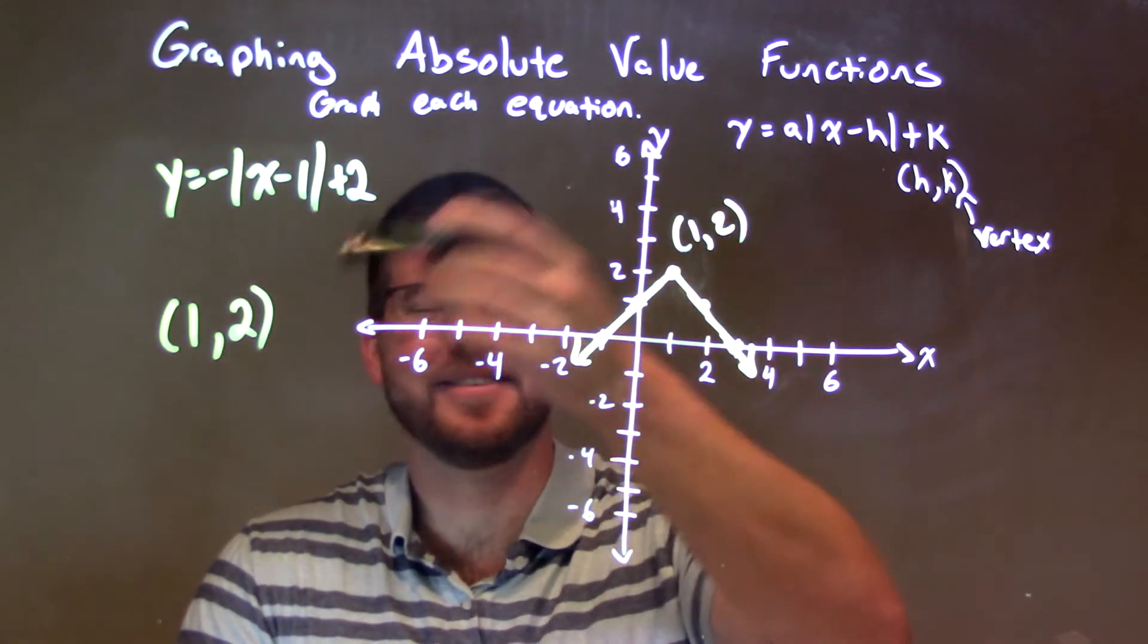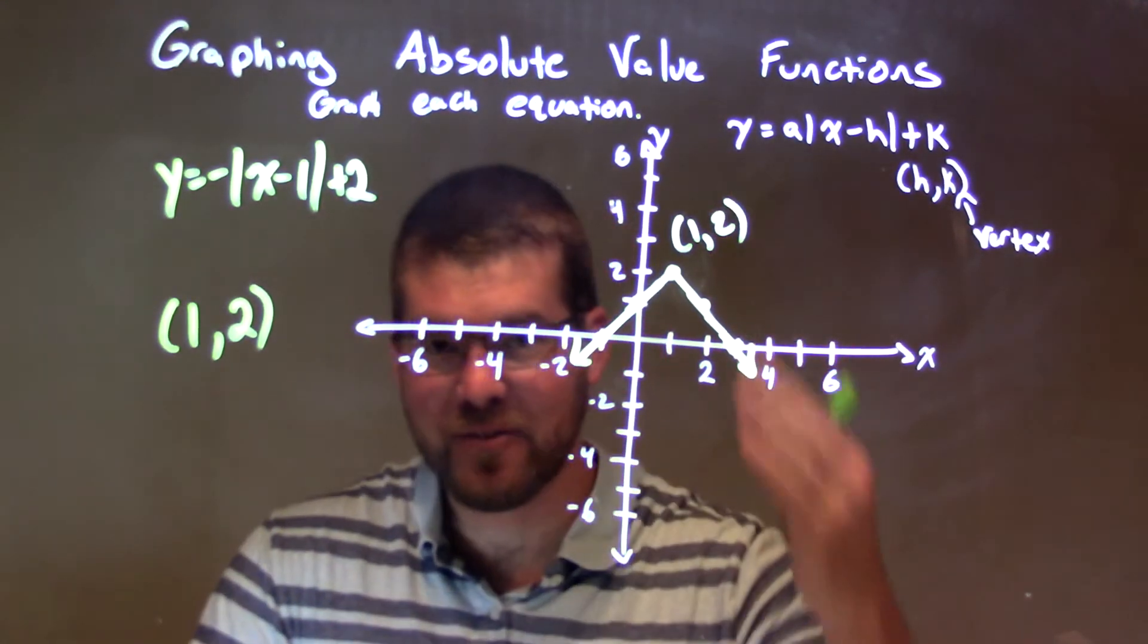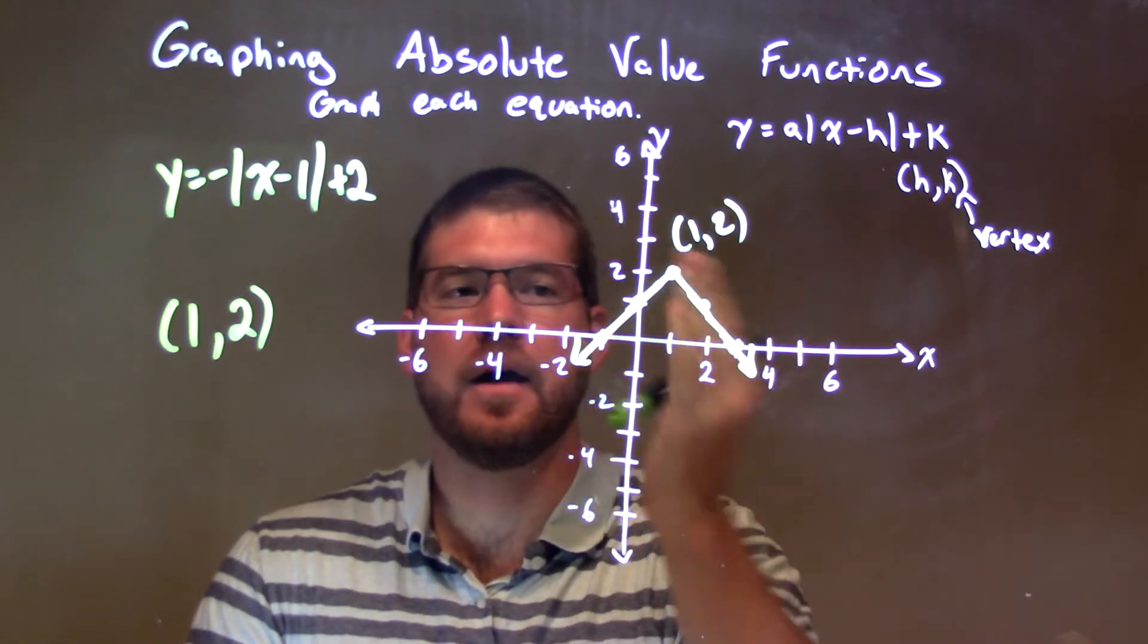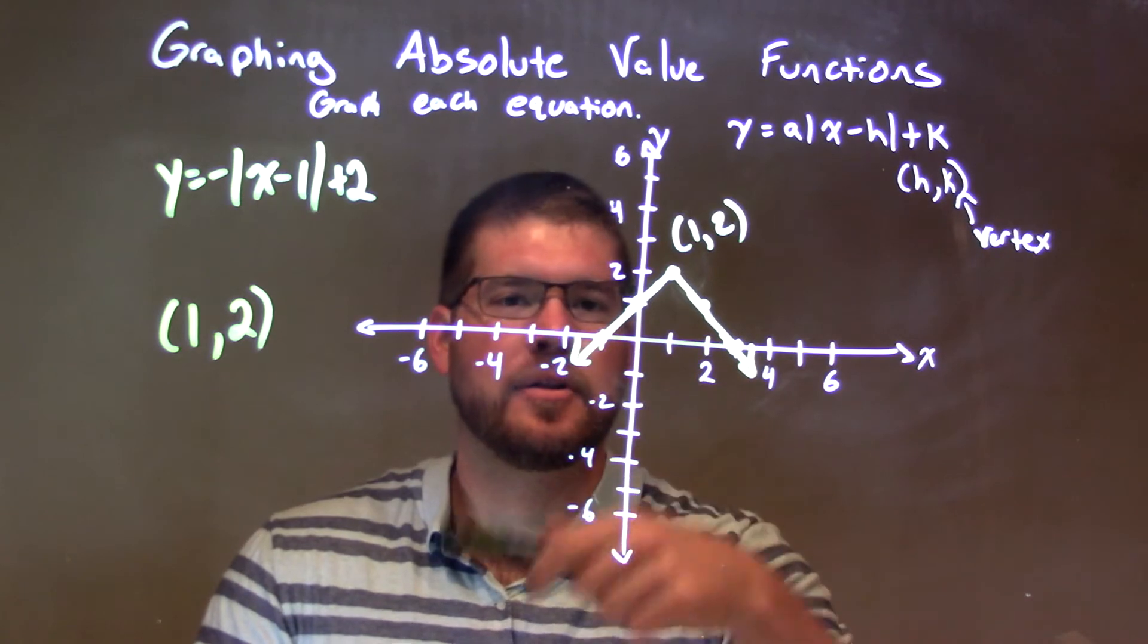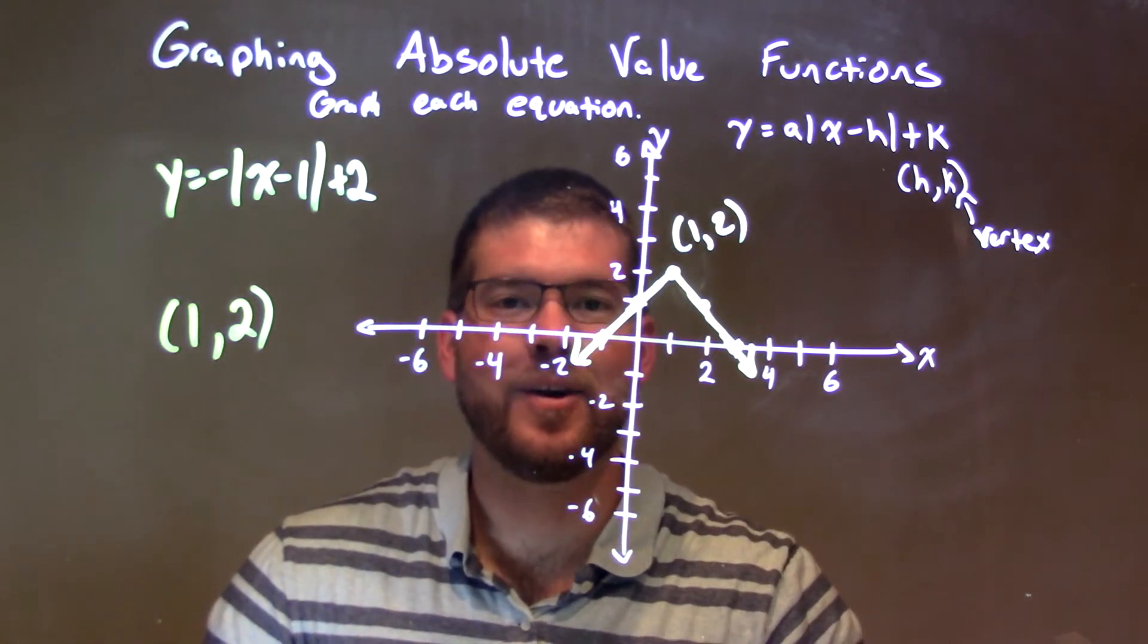We have our a value. There's our slope of the negative 1. Negative, upside down v, right, like a roof. Down 1 to the right 1, down 1 to the right 1. Mirror that to the left. Down 1 to the left 1. Then connect our dots, and the v is going down this way. And then we have our final answer.